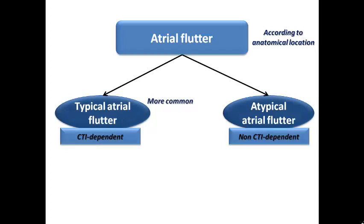The term 'typical' is based on whether the re-entrant circuit depends on the cavo-tricuspid isthmus as an integral part. If the atrial flutter has this isthmus tissue as part of the circuit, it is called typical atrial flutter, which is more common in practice. If the flutter doesn't depend on the cavo-tricuspid isthmus — for example the circuit is inside the left atrium or right atrium without involving the isthmus — it is called atypical atrial flutter, which is less common.